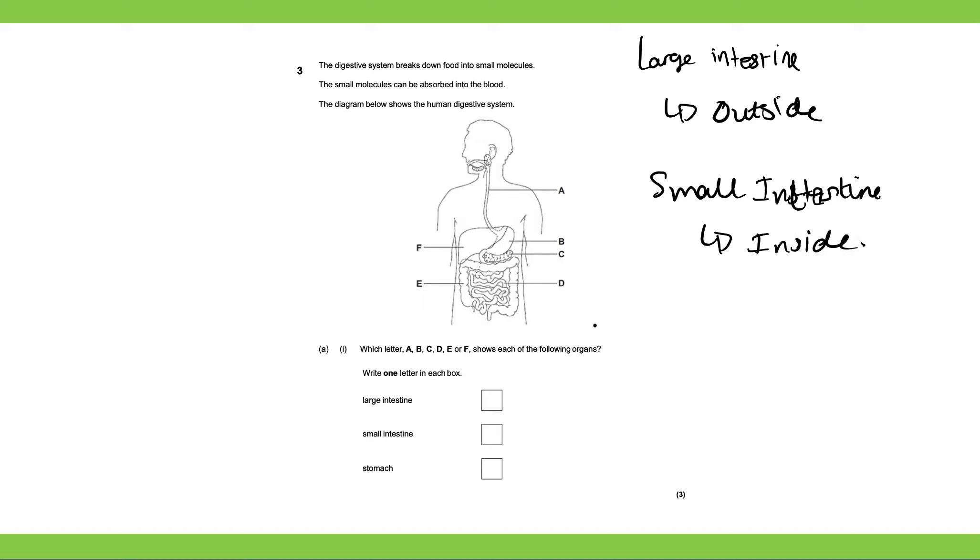Okay, so the large intestine would be E and the small intestine would be D. And the stomach, well that's a bit hard as you have loads of organs. It's on the right hand side. That's the liver. You can see the gallbladder underneath it. You can see the pancreas underneath it as well.